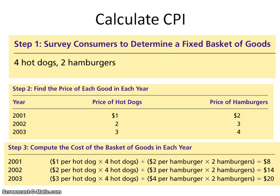In this market basket, it's a really simplified one — you have hot dogs and hamburgers. You're not looking at how much more quantity-wise you're selling from one year to the next; the quantity is always the same. You're always going to have four hot dogs and two hamburgers. What's changing is the price they're being sold at over the years. To figure out the price of the market basket, you multiply price times quantity of each good that year and add them together. In 2001 it was $8 total, $14 for 2002, and $20 for 2003.